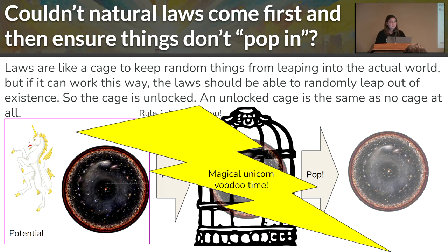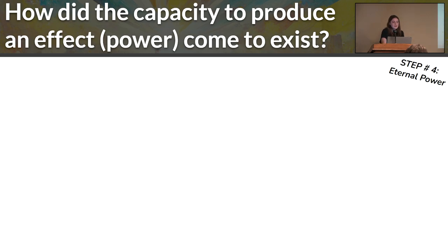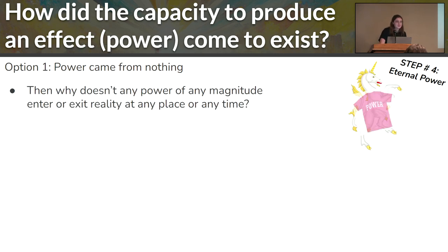So we can pretty much rule out that for a foundation, and we're still left with this independent, self-sufficient something in all of everything that we need to account for. So now, how did the capacity to produce effects, or basically the ability to be a cause, come to exist? Well, there are three options. The first is that it came from nothing. As our unicorn has demonstrated by now, that's really not a good idea. That's not a good option.